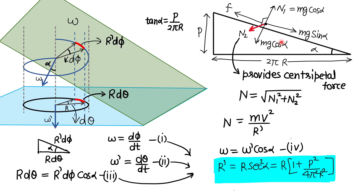Now let me come to the problem. If we make the free body diagram of this bead, we can take the component of gravitational force: one component along the plane is Mg sin α. This angle is α. From the geometry we can write tan α = pitch / 2πR, so we know the value of α.